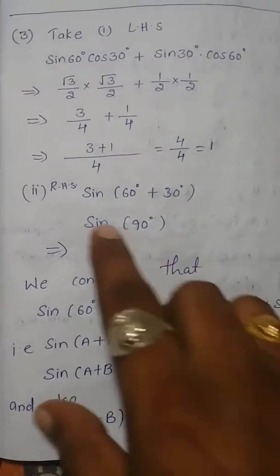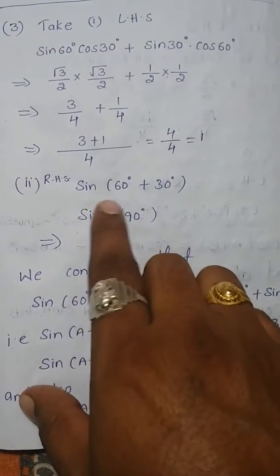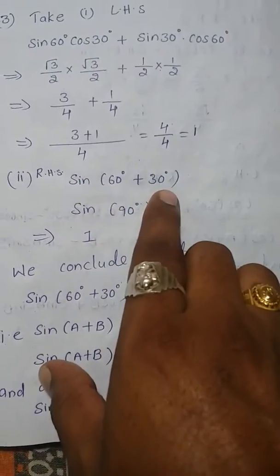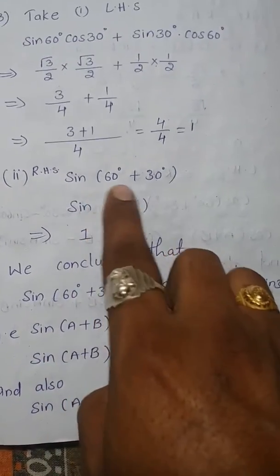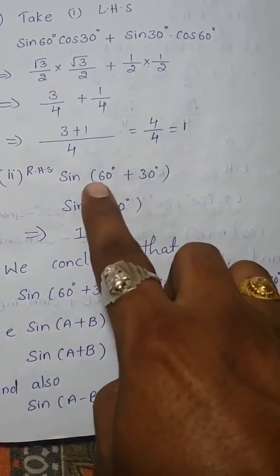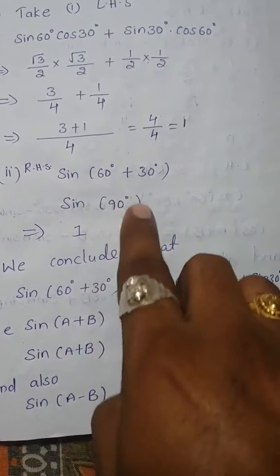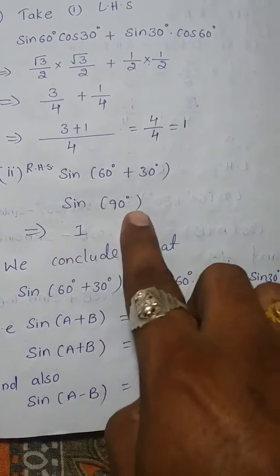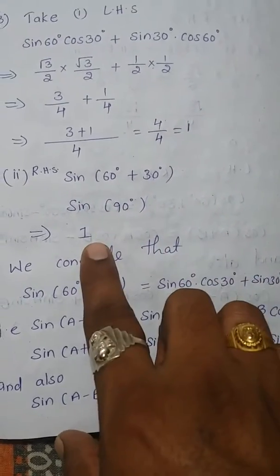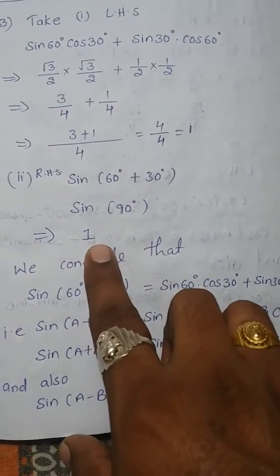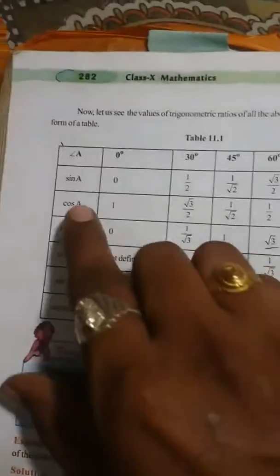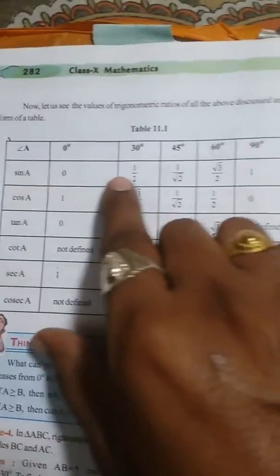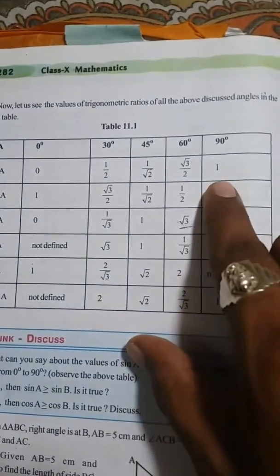Now find the value of sin(60+30). sin(60+30) is sin90°, which equals 1. From the table, sin90° is 1.